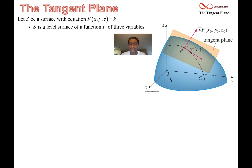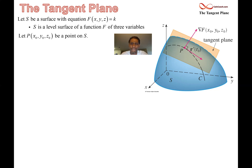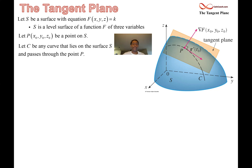We'll be interested in a particular point P, which will be our point of tangency. We call that point x₀, y₀, z₀. What we're going to find out is that the gradient vector is the normal vector. Let's try to figure out why that's the case. So, we're going to have a curve C be any curve that lies on the surface but also passes through the same point P — the key is that it's on the surface and it passes through P.